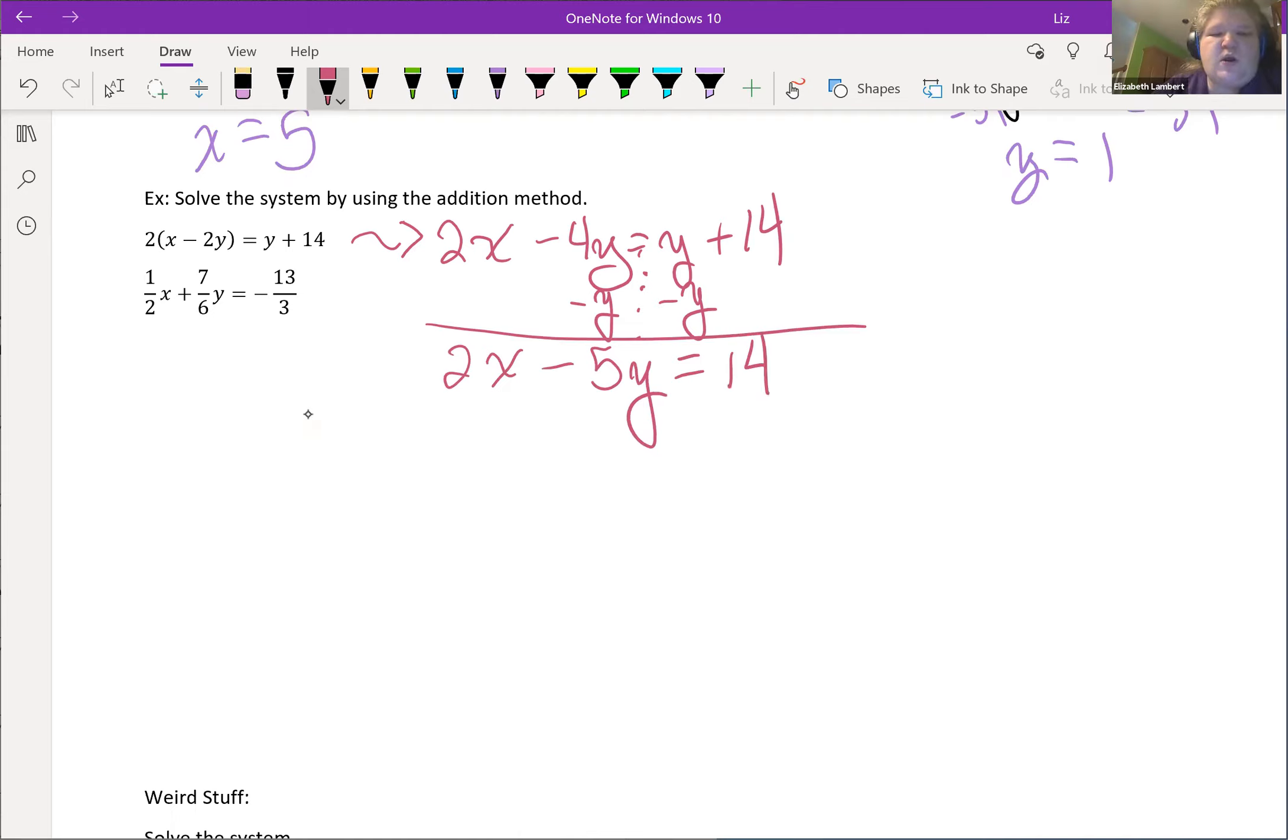There's one of our equations in standard form, x and y on one side, number on the other. Now this ugly equation up here, I want to get rid of those fractions. I don't want to try this method with fractions, it is ugly. Likewise if you want to try to graph these, first thing get rid of the fractions then solve it for y. So I need a number that 2, 3, and 6 all divide into, or the common denominator between 2, 3, and 6 is 6.